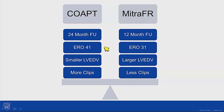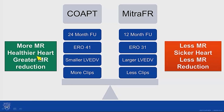There was also a difference in how much regurgitation they were treating. The average ERO in COAPT was 41, whereas MITRA-FR used the older definition of severe MR with an ERO of 31. COAPT had smaller ventricles — earlier in the disease — while MITRA-FR had larger, sicker ventricles. More clips were used on average in COAPT, achieving more complete MR reduction. In summary: more MR, healthier hearts, greater MR reduction, and longer follow-up in COAPT explains the positive results, versus less MR in sicker hearts with less reduction in MITRA-FR.